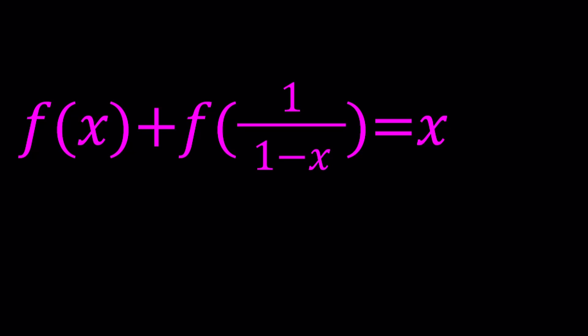We have f of x plus f of 1 over 1 minus x equals x, and we're going to be solving for f of x — we're going to try to find an expression for f of x in terms of x. We'll do that by substitution. This is our main equation. We're allowed to replace x with other things as long as we stay within the domain.